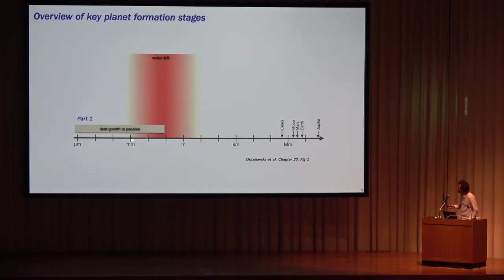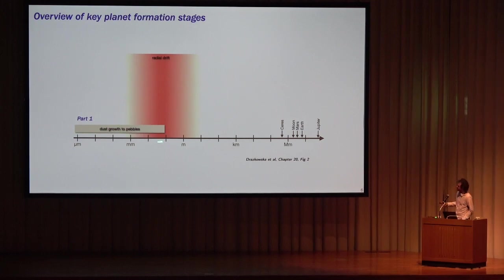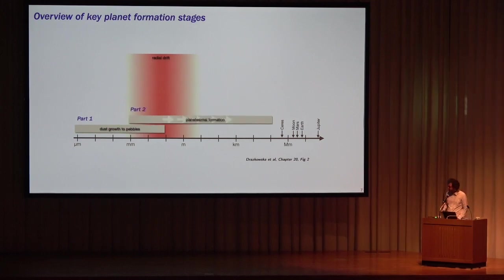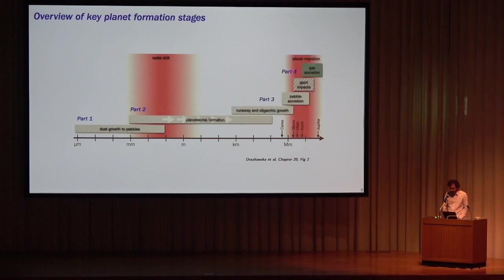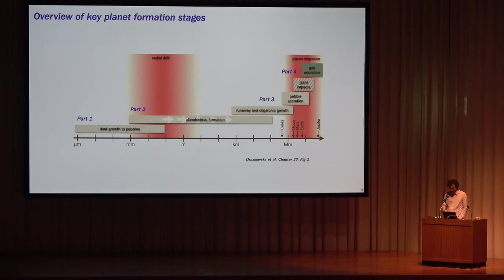We start from dust growth to pebbles — that will be part one of the talk — and we'll talk about radial drift. We'll continue to cover the planetesimal formation process, and then move forward and discuss various ways to make larger protoplanets that accrete gas and migrate inwards in protoplanetary disks, so we'll do it step by step.